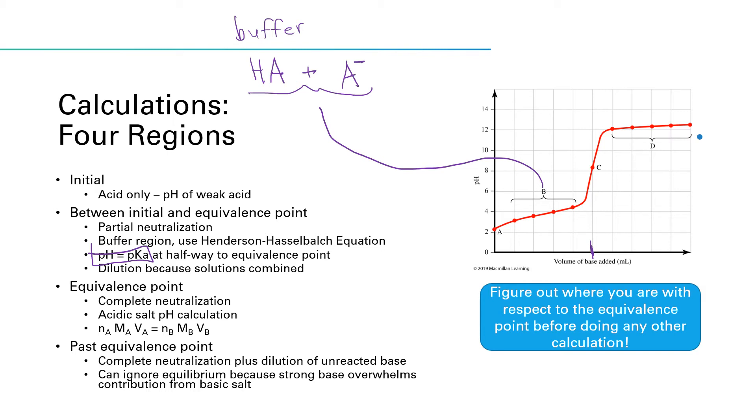And so if we go instead of five squares over from the origin, if we go two and a half squares over, we would be at this point here. And at that point, what we call the halfway point, pH will be equal to pKa. And the reason for that is that half of your acid has been converted to salt. When you look at the Henderson-Hasselbalch equation, that ratio of the conjugate base over the conjugate acid, well, if the acid and the base have equal concentrations, the ratio becomes one. The log of one is zero. And so the Henderson-Hasselbalch equation reduces to pH equals pKa.